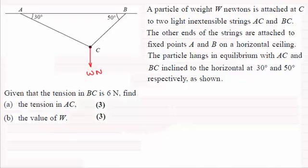Next thing we need to do is mark on the tensions. Now we're given that the tension in BC is 6 Newtons so that would act in that direction. Just mark that on as 6 Newtons. And then you've got the other tension which we've got to find in AC. So that's going to act in this direction. And I'll just call that T, T Newtons okay.